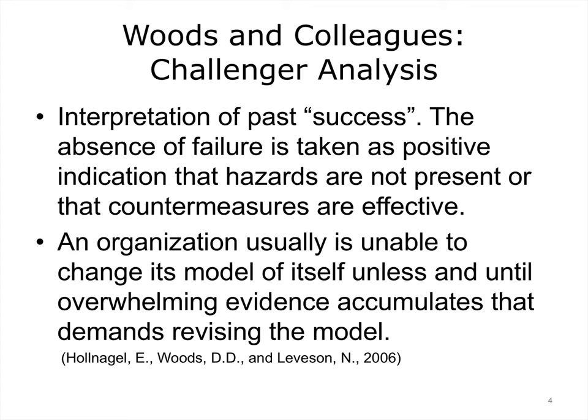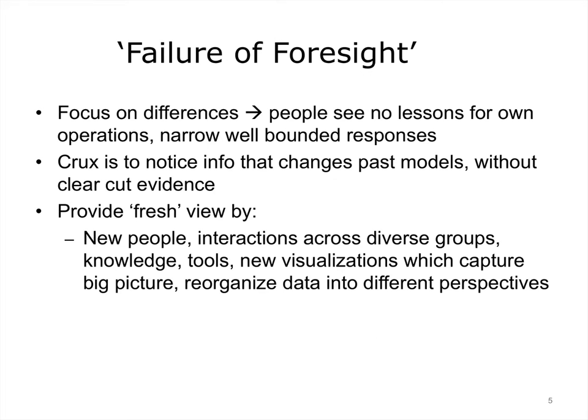Woods and colleagues provided an example on the Challenger analysis and stated that responsiveness to the evidence is important in an organization's self-assessment. In addition, Woods et al. describes the failure of foresight as one cause of disasters like Challenger. This is due to mental traits in which errors in other situations are viewed as too different from one's own, so lessons are not learned. Most complex processes may not initially have clear-cut evidence that a dangerous situation is emerging, so people must notice information that changes their models without it.